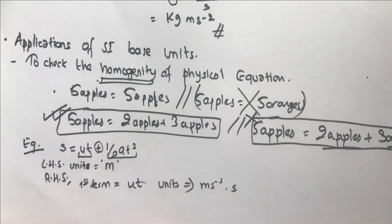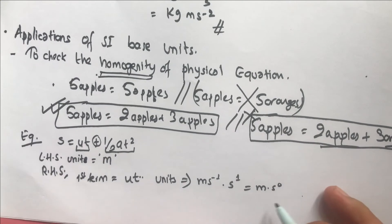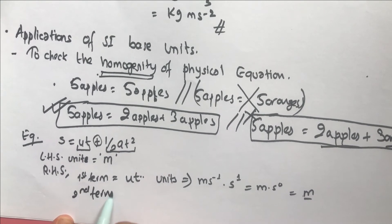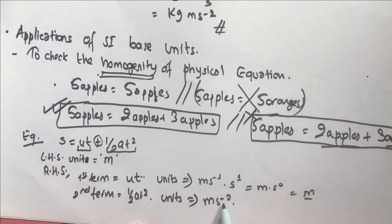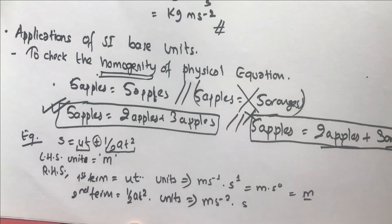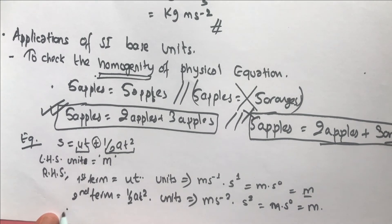Since velocity is m·s⁻¹ and time is s¹, the exponents give s⁻¹⁺¹ = s⁰ = 1, so the first term has unit meter. The second term is ½at²: the number ½ has no unit, acceleration has unit m·s⁻², and t² means s·s = s². So the units are m·s⁻²·s² = m·s⁰ = meter. Both terms have unit meter, so this equation is homogeneous.